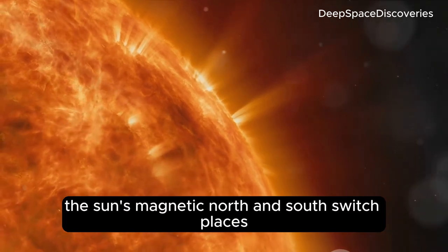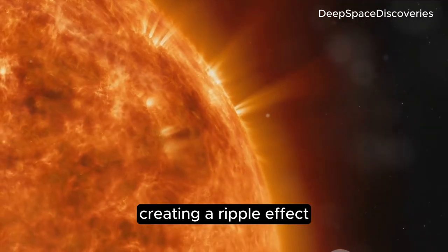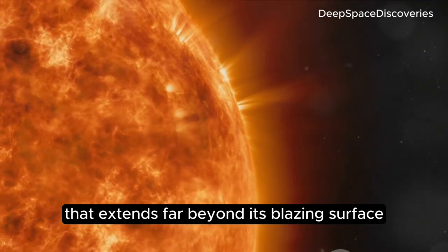That's right, the Sun's magnetic north and south switch places, creating a ripple effect that extends far beyond its blazing surface.